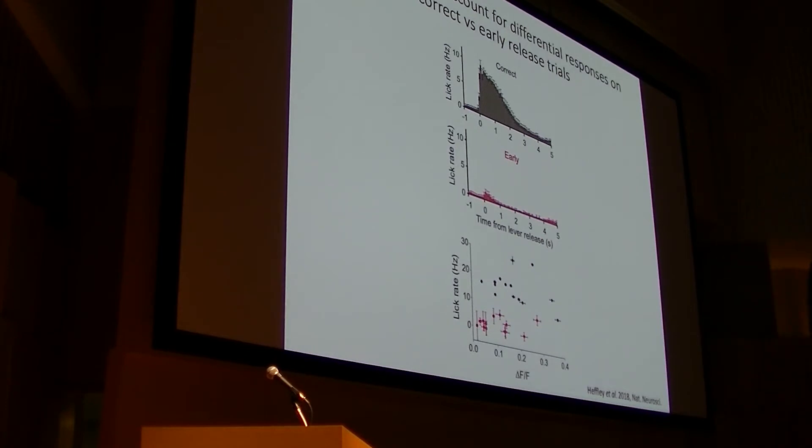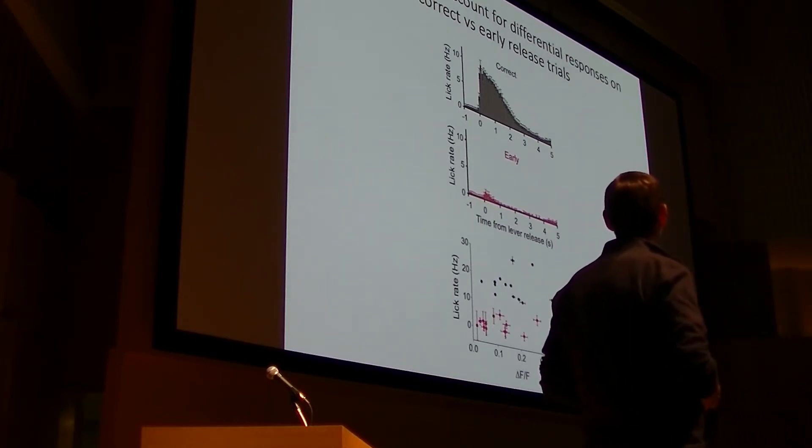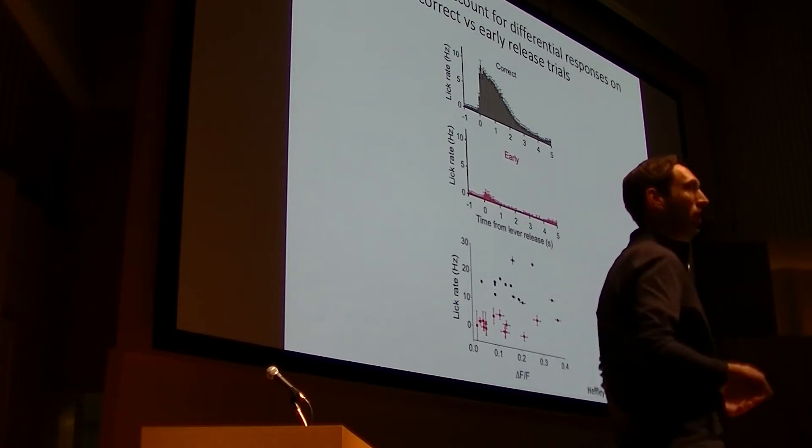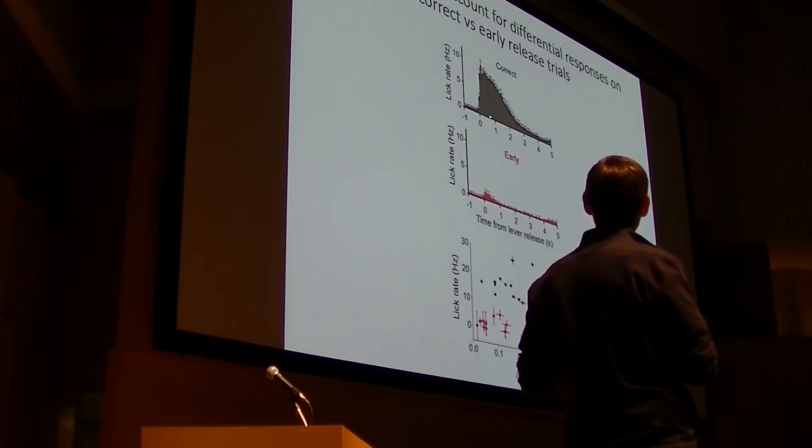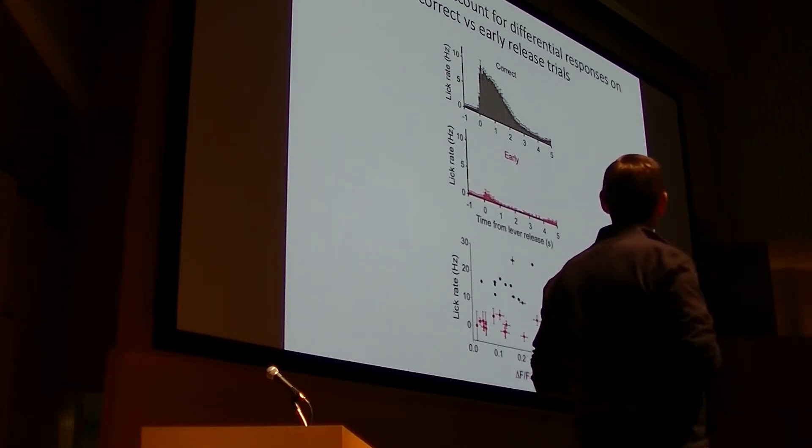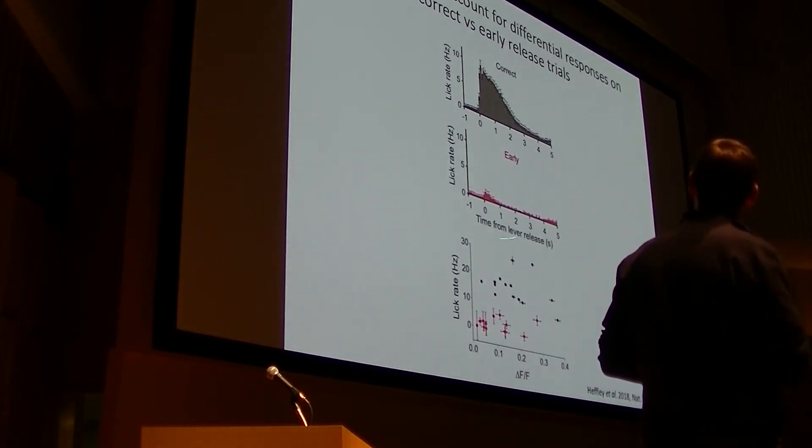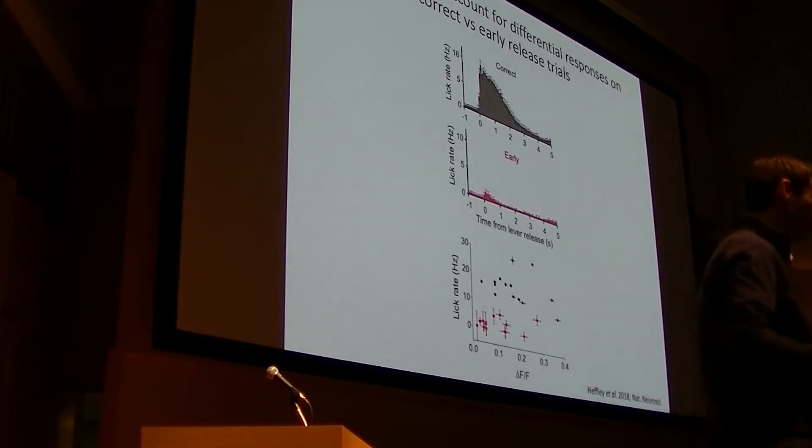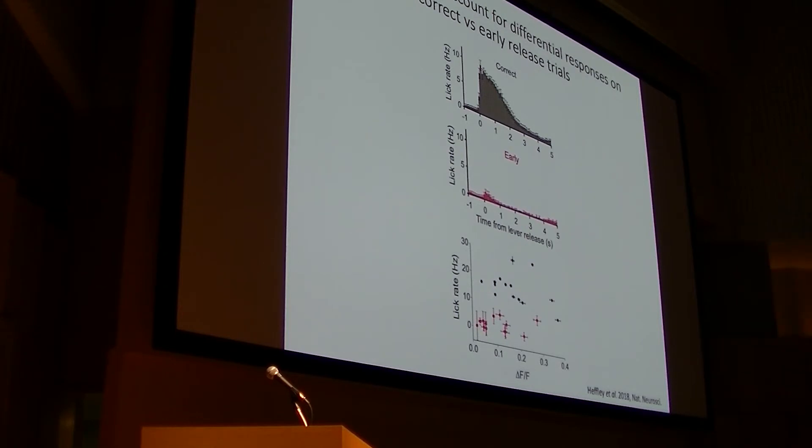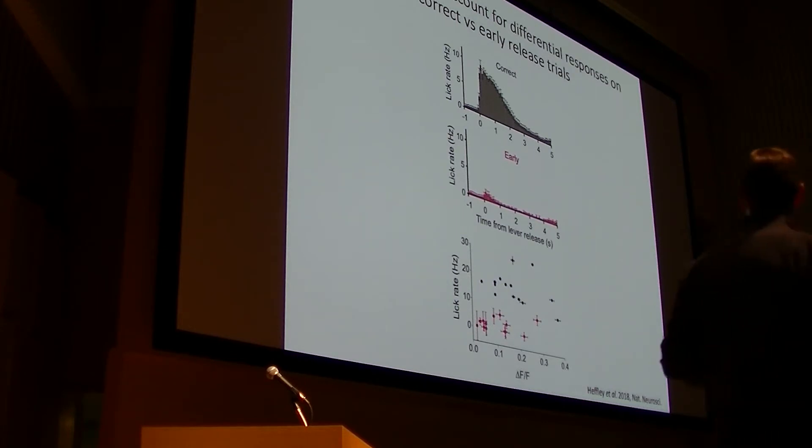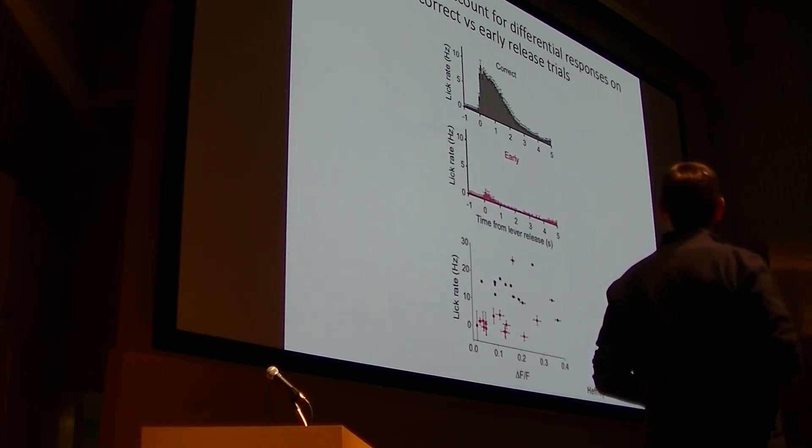The next thing we wanted to rule out is whether this difference in neural activity and the difference in motor output is due to licking. We're not in an area that's known to be causally related to licking, but of course, when an animal correctly timed its movement, it gets a reward and it licks more than when it doesn't get a reward. This is indicated here in this histogram of lick rates where you can see the lick rate shoots up to almost 10 hertz and persists for a couple of seconds when animals correctly timed their movements and that's not true in the mistimed movements. But if you look at the amplitude of calcium transients as a function of lick rate for either mistimed movements or correctly timed movements, we find no correlation, suggesting that it's not the case that we're seeing a difference owing to motor output due to licking.